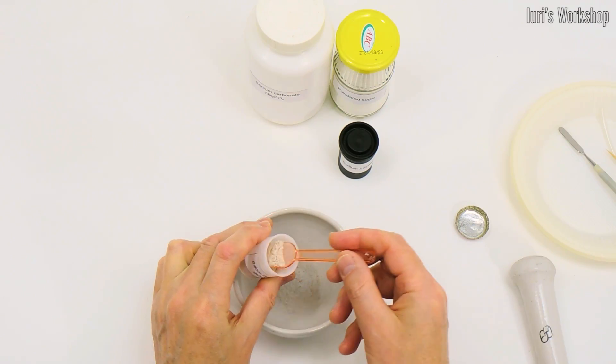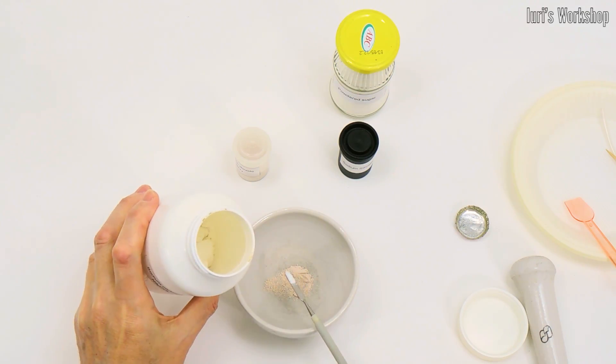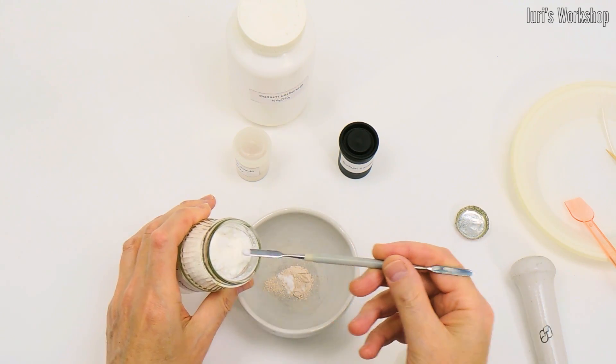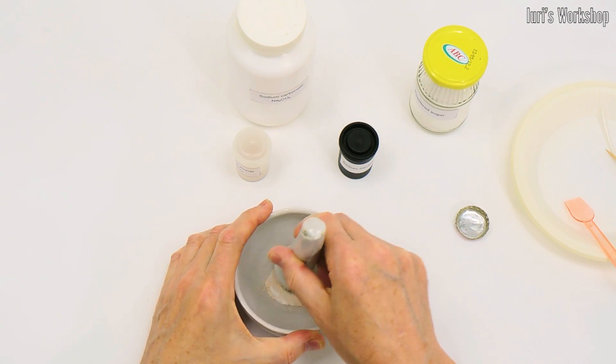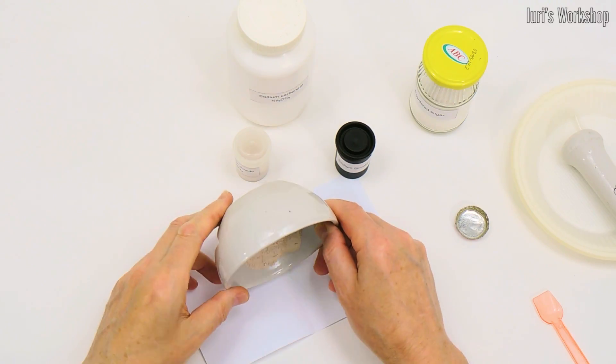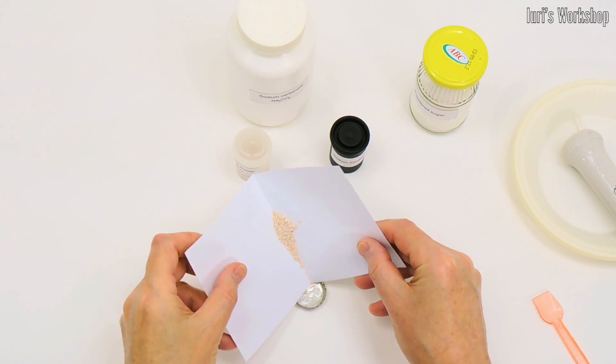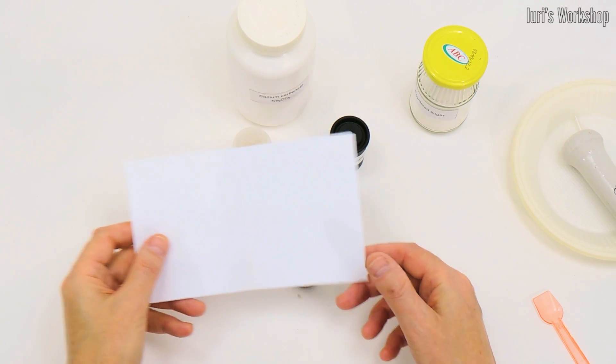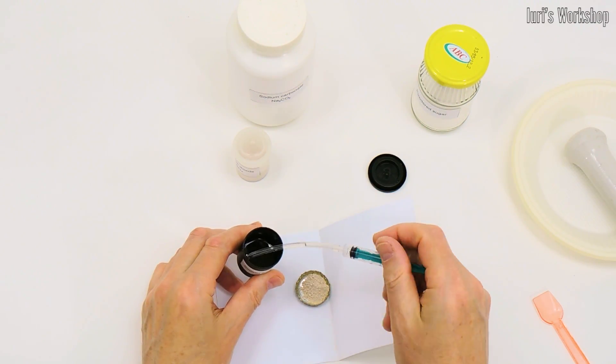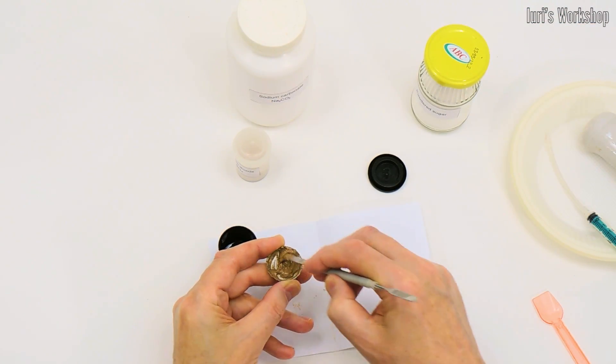To make heat-resistant mastic, we need to thoroughly grind quartz flour, soda ash and powdered sugar. Then this mixture must be poured into a metal or plastic dish. Add liquid glass there and mix everything well. You will find a more detailed recipe for mastic in the description of the video.